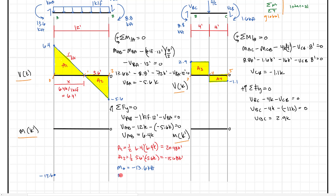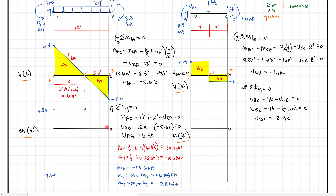M1 equals M0 plus A1. When we add minus 13.6 and 20.48, we get plus 6.88 kip-feet. So at this point we come up to 6.88 kip-feet. Then our moment at point two equals M1 plus A2. We're going to subtract 15.68 from 6.88, and this will bring us back to minus 8.8 kip-feet. We can come in and plot that point as well, and label it minus 8.8.